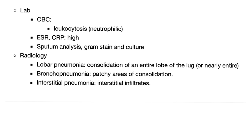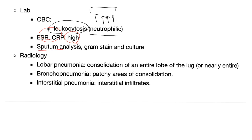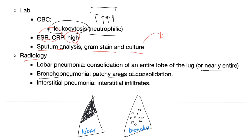Since pneumonia is a lung infection, you'll have fever and leukocytosis — specifically neutrophilic leukocytosis with lots of neutrophils, because it's usually bacterial and neutrophils fight bacteria. ESR and CRP are elevated due to inflammation. Sputum analysis, Gram stain, and culture are used to detect the organism. On radiology: lobar pneumonia shows consolidation of an entire lobe; bronchopneumonia shows patchy areas of consolidation; interstitial pneumonia — which is actually fibrosis — shows interstitial infiltrates.